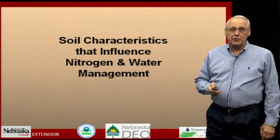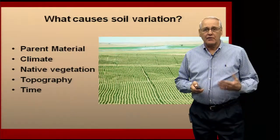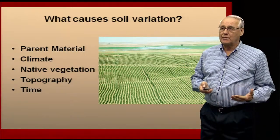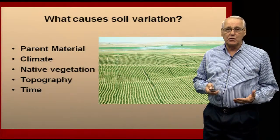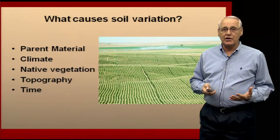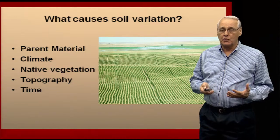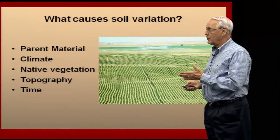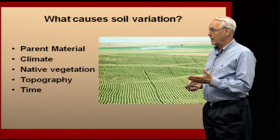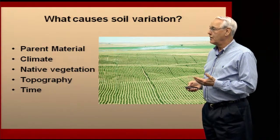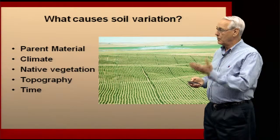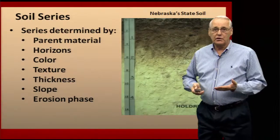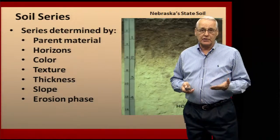One of the things when producers manage nitrogen and water, they worry about the causes of soil variation. If you go back to our beginning soils courses, the thing that causes soil variation are the five soil forming factors, noted here in the slide. Those are the parent material, the climate, the native vegetation, topography, and time. Those factors lead to the creation of our soils and our soil series.